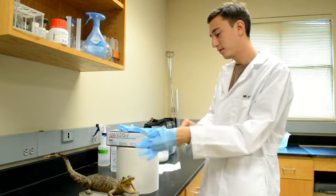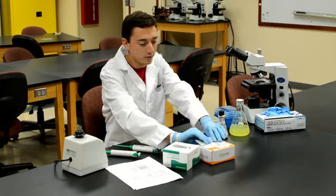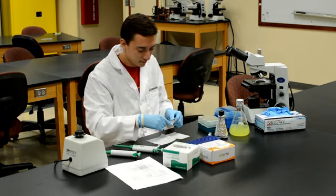Now that you have your supplies you are ready to begin. Start by putting on your gloves. Once your gloves are on retrieve your hemocytometer, unwrap it and place it on your Kim wipe.